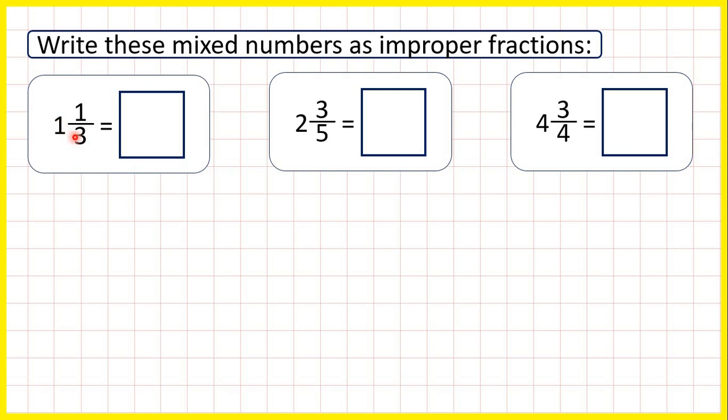When changing mixed numbers to improper fractions, the denominator of our improper fraction stays the same, so the denominator of our fraction here will be three. To find the numerator, we multiply the whole number by the denominator.